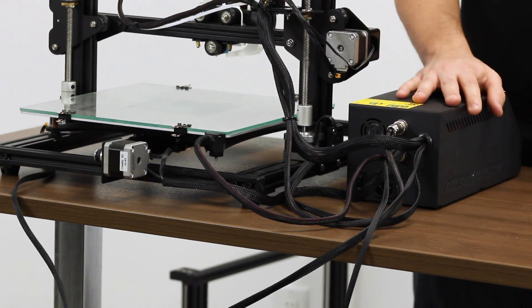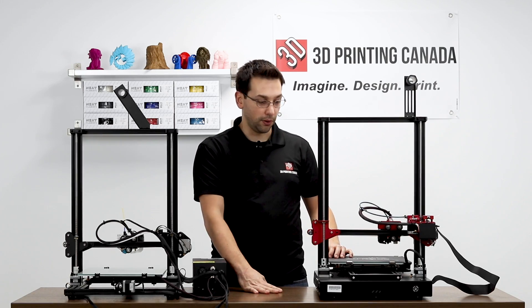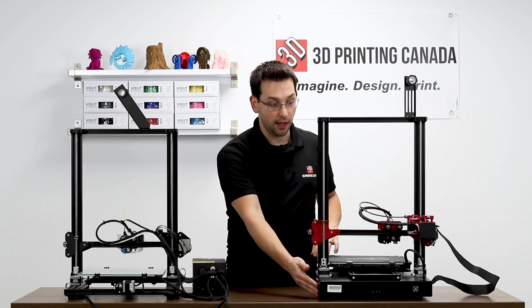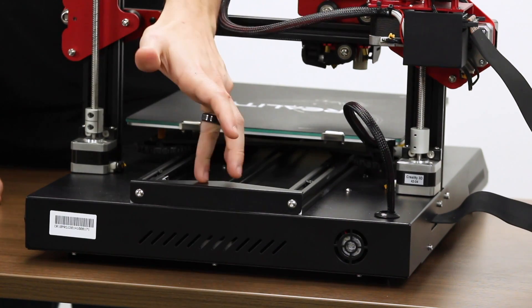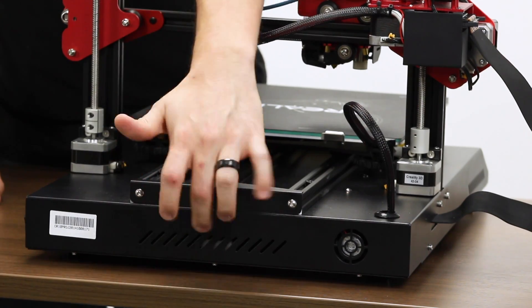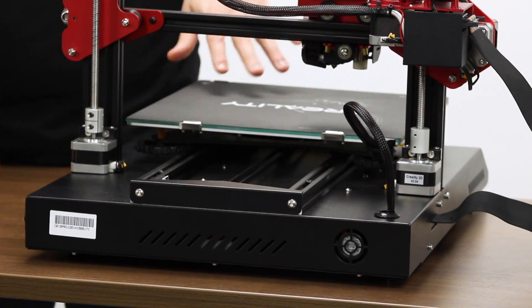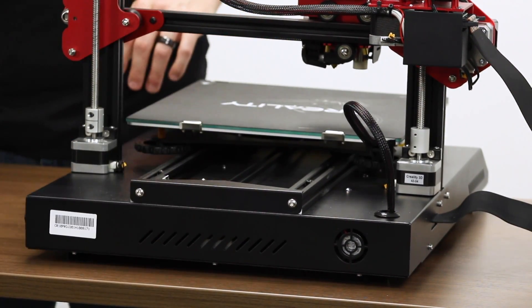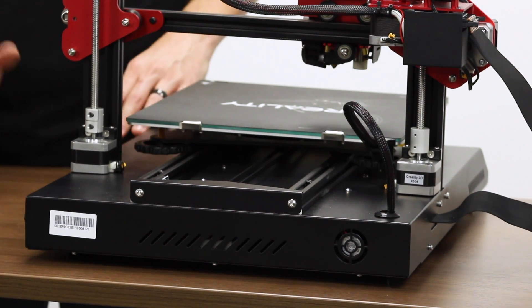And let's see how that compares. On the back of the CR-10S Pro, we have the power inlet and the on-off switch. And we have the Y-axis motor that, instead of sticking out the back, is actually inside the case here. And to fit that inside the case, that's the reason they changed the orientation of the belt 90 degrees.